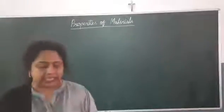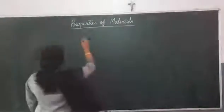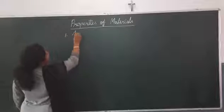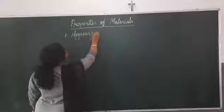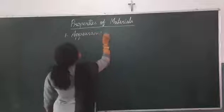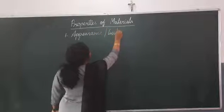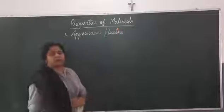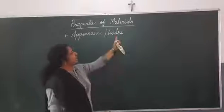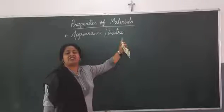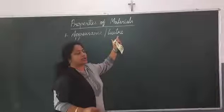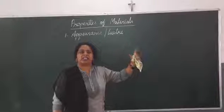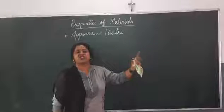The first property given in your book is luster — the appearance. What do you mean by luster? Luster means an object which has got shine in it. The word 'lustrous' means any object which has got shine in it.